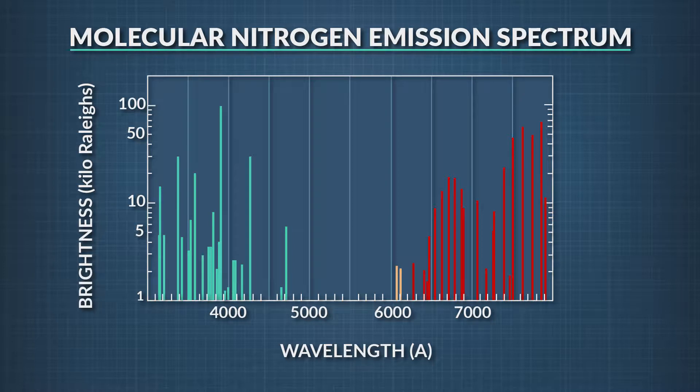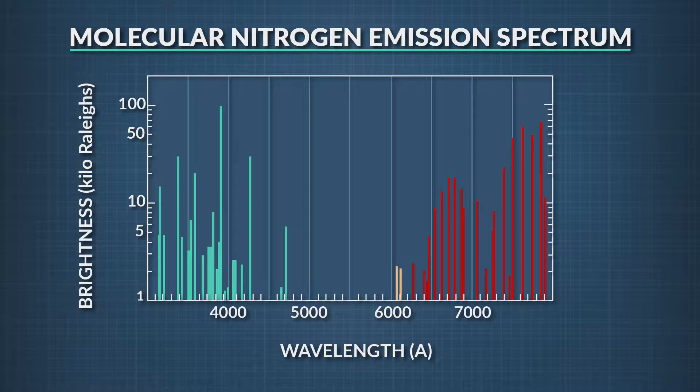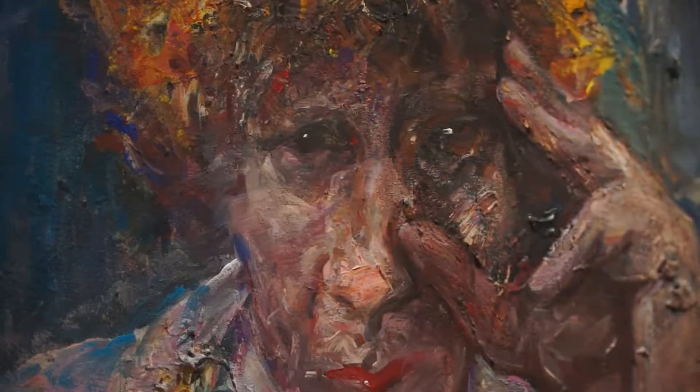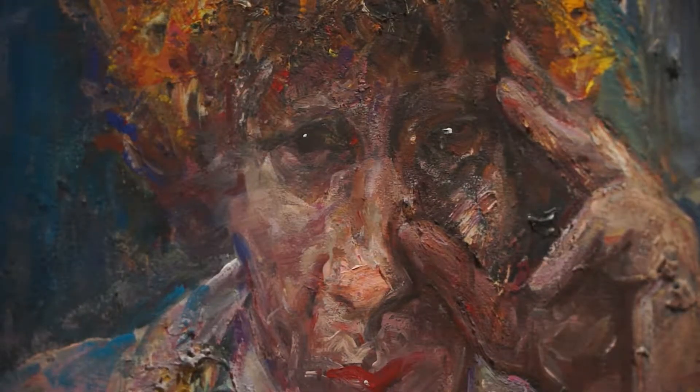It's that pattern of absorption and reflection that gives us the infinite array of color that we use to make the dyes in textiles, and the pigments in art that add so much color to our lives.